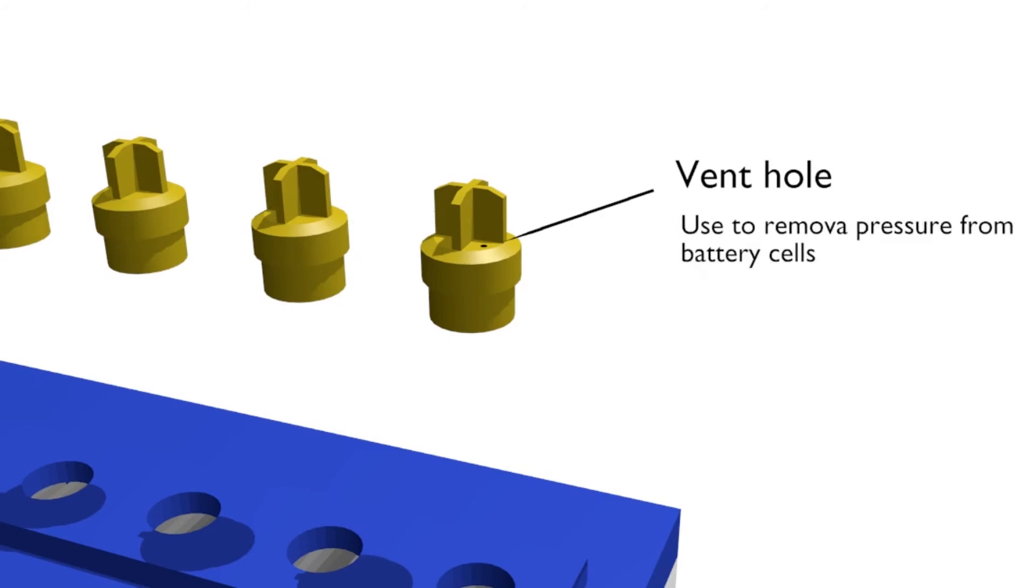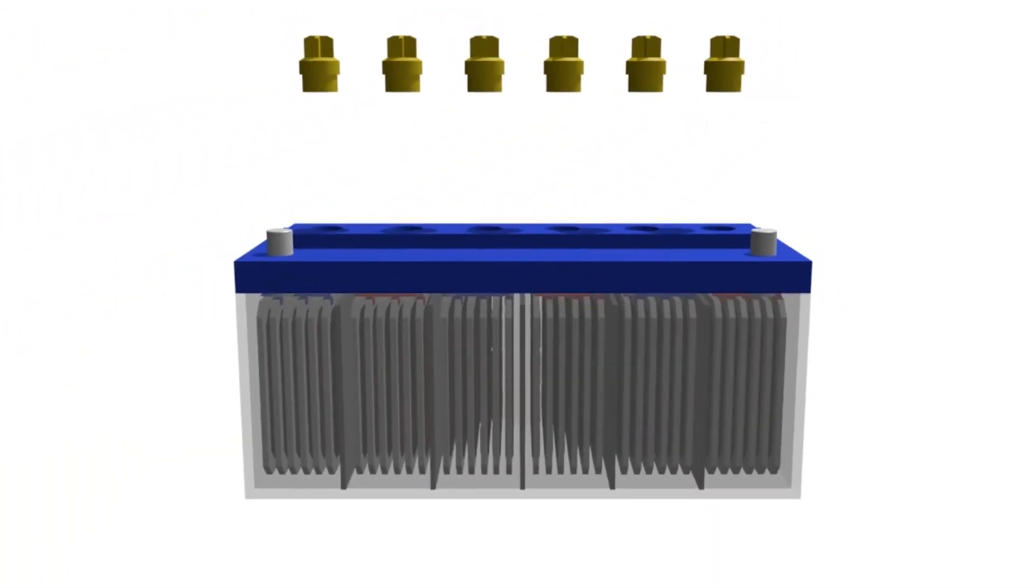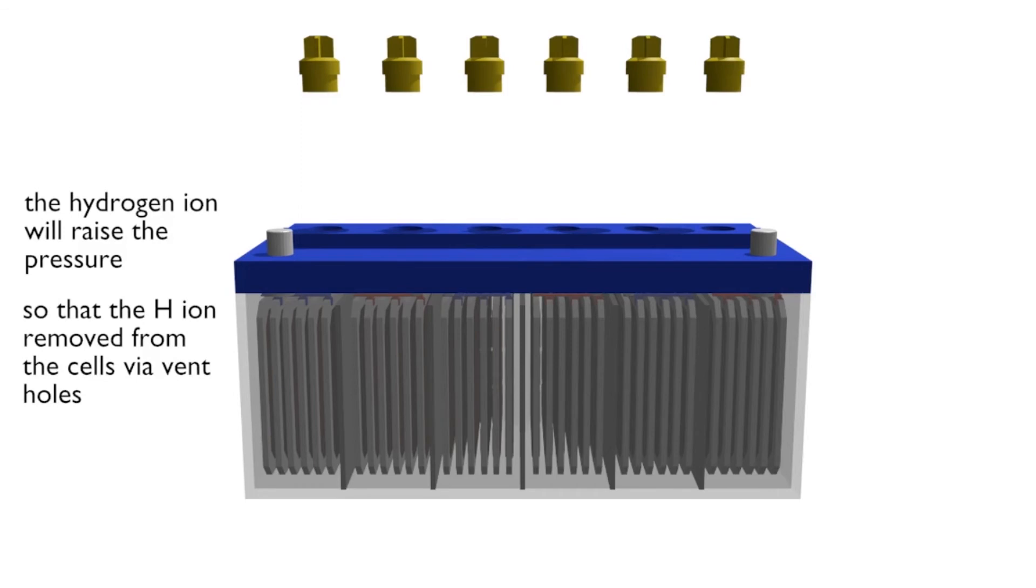As we discussed earlier, during the charging process, hydrogen ions are released. The hydrogen ions on the surface have the potential to evaporate, thus increasing the pressure inside the battery cell. This ventilation hole provides a way to remove hydrogen ions and keep the pressure stable.